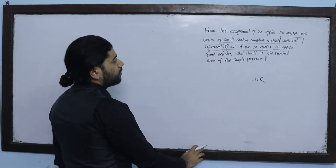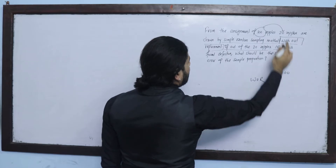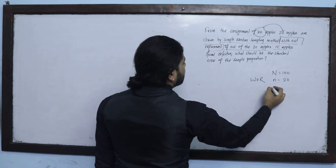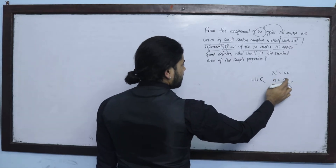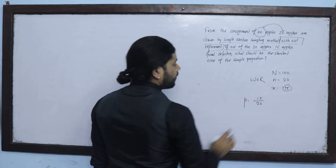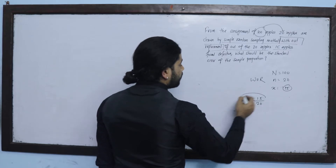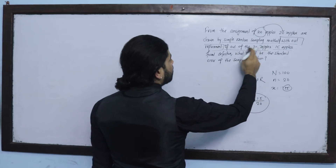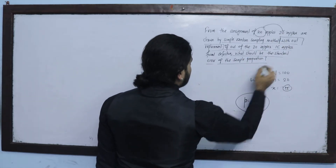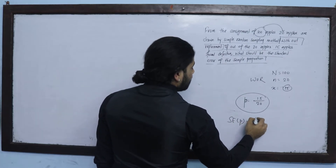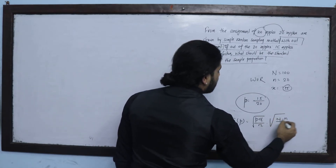what should be the standard error of the sample proportion? The standard error of the sample proportion is given by: small p times small q upon root n, into N minus n upon N minus 1.